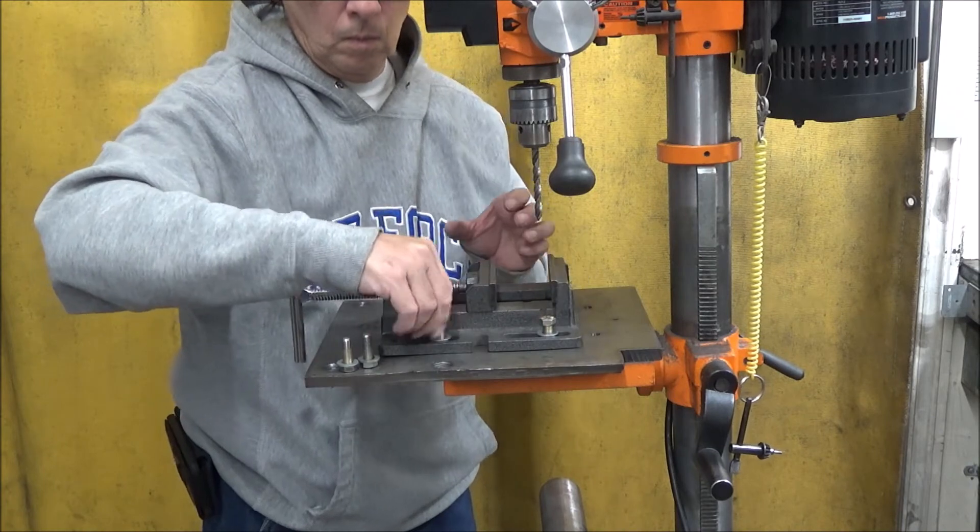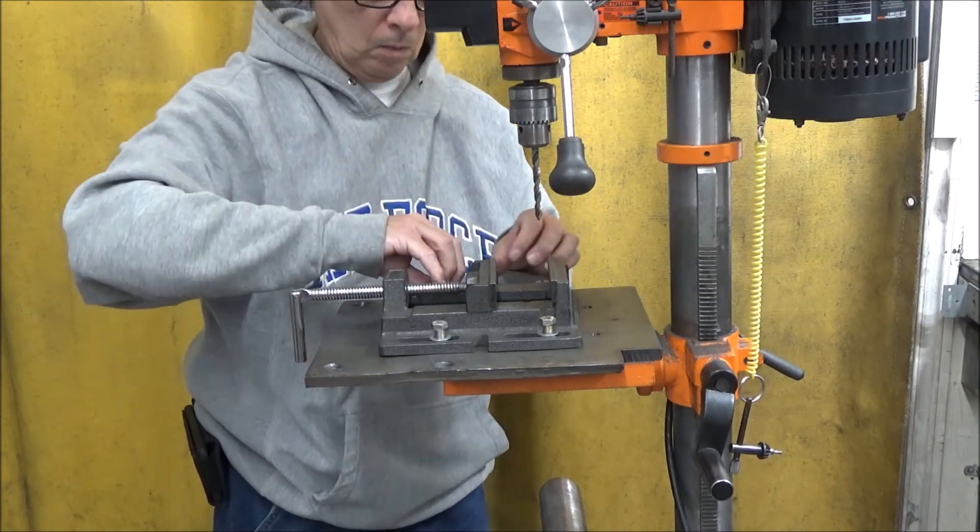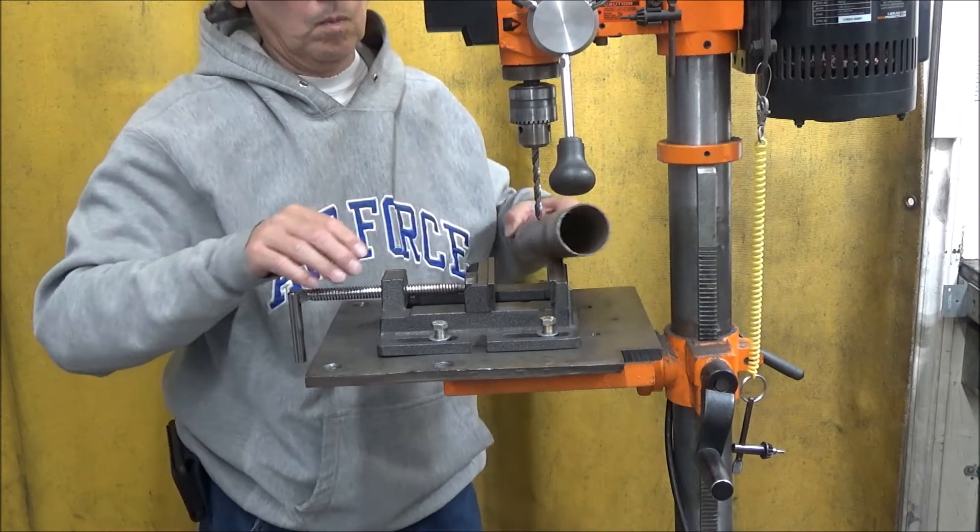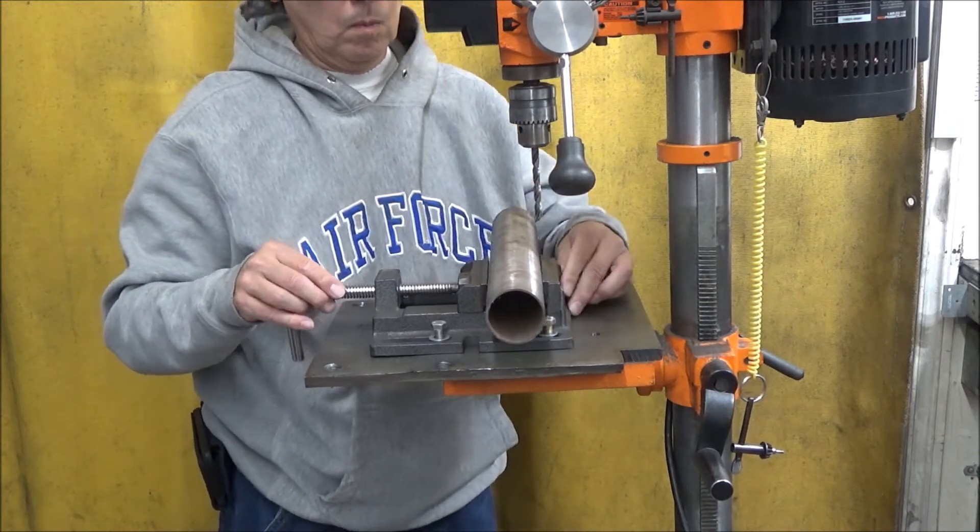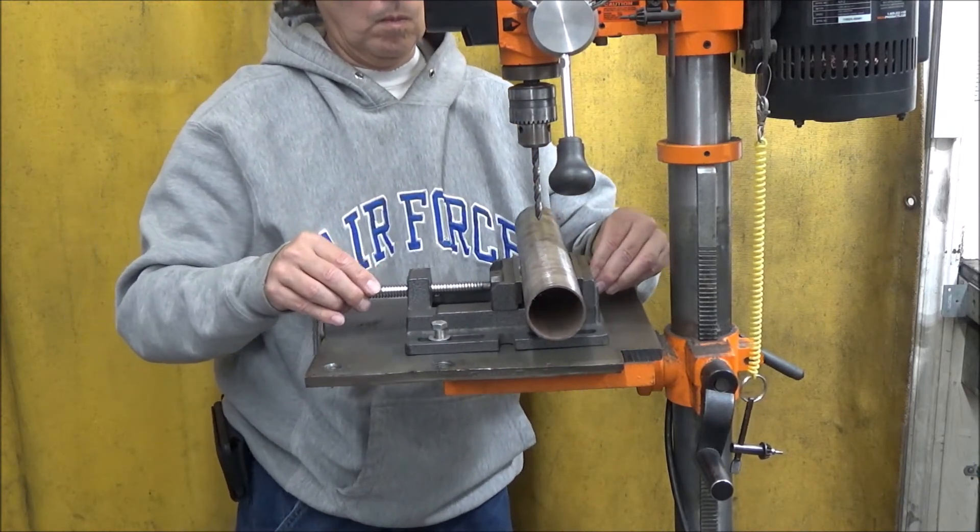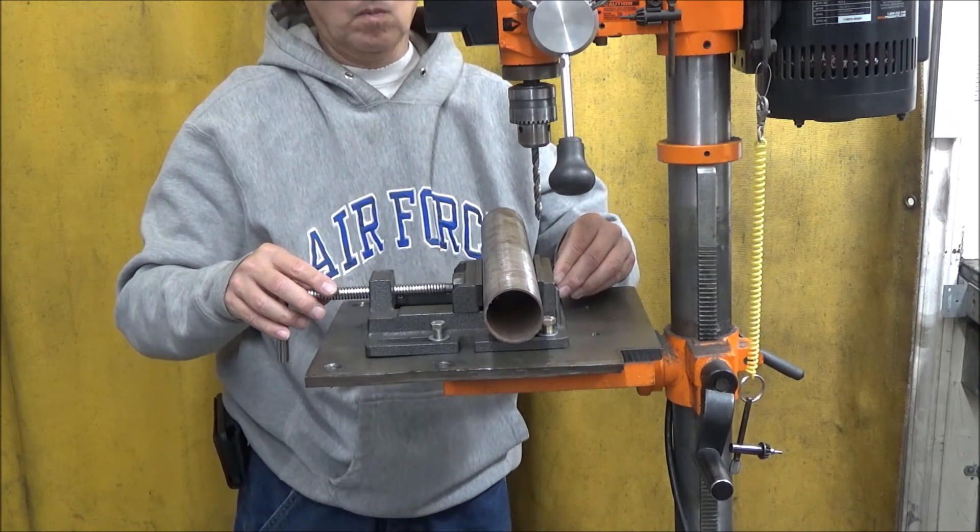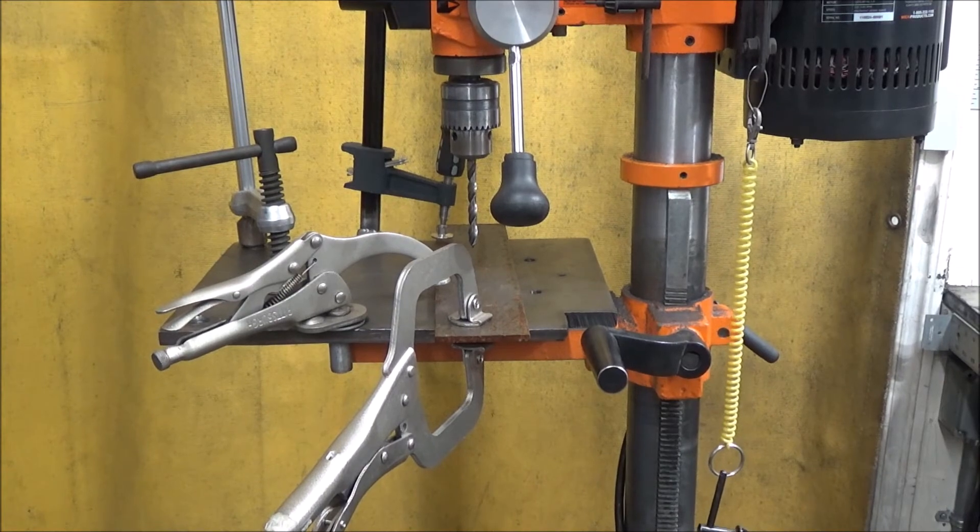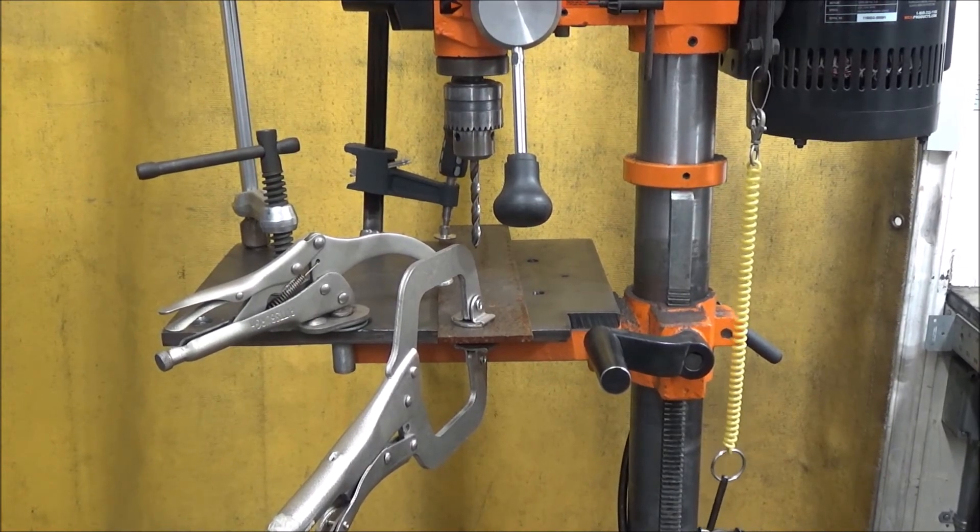Now for the vise. I just squared it up with the table then I drilled and tapped for some three eighths fine thread bolts. Now I can move the vise forward and back then tighten the bolts to keep the vise in place. If I need more forward or back travel then I'll just use two bolts. These are four clamping methods that I use. The steel plate is a lot better for clamping.